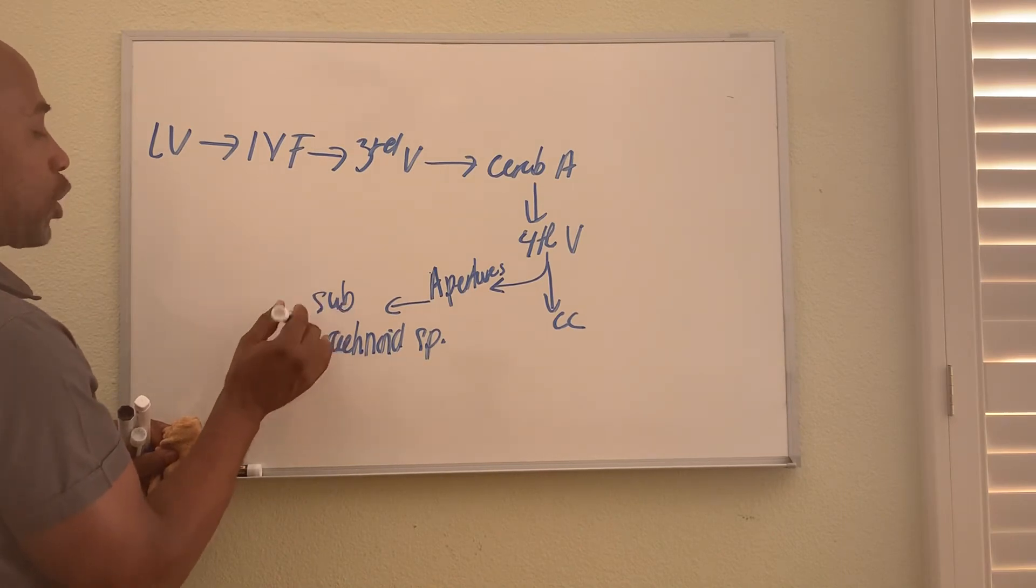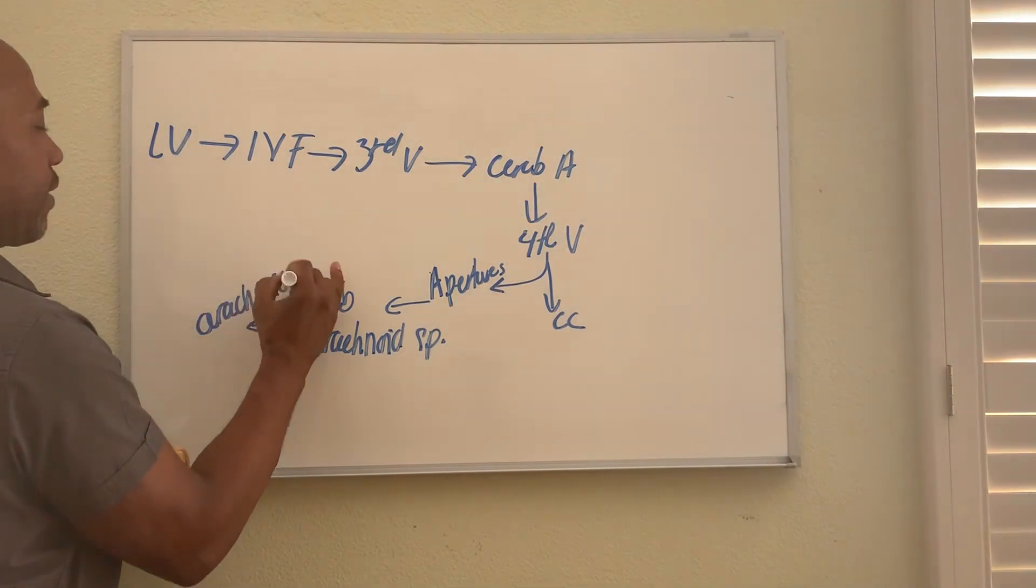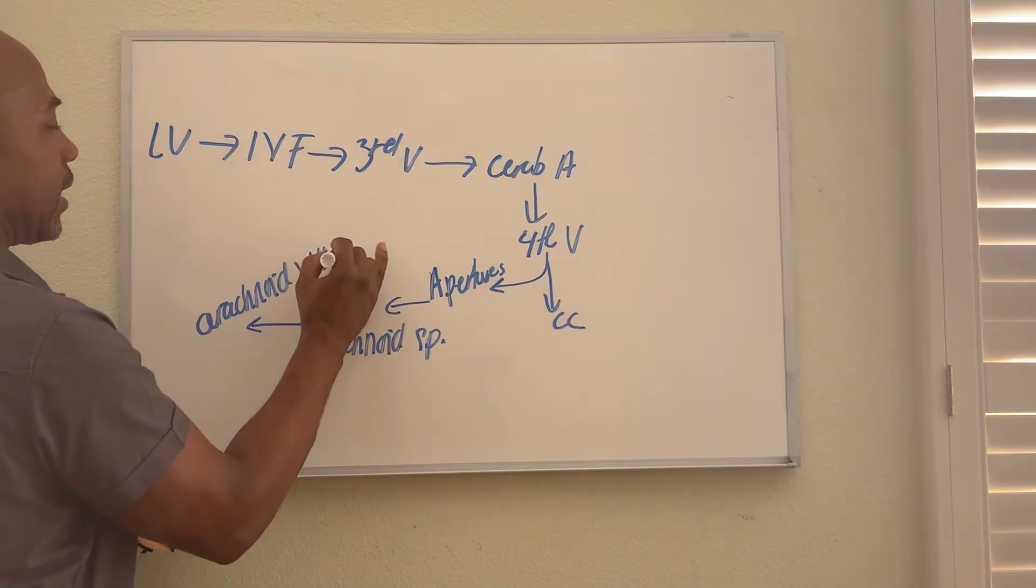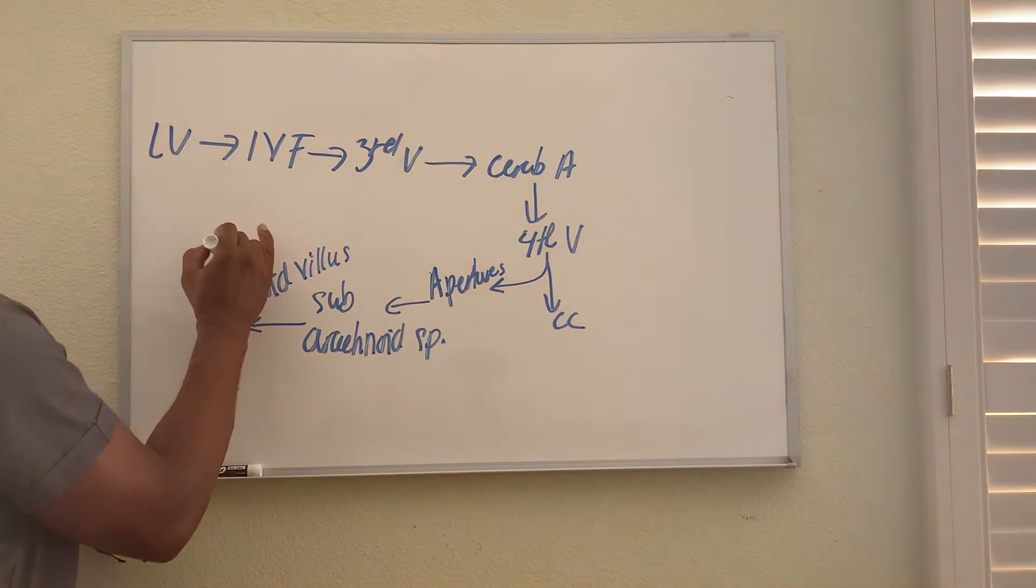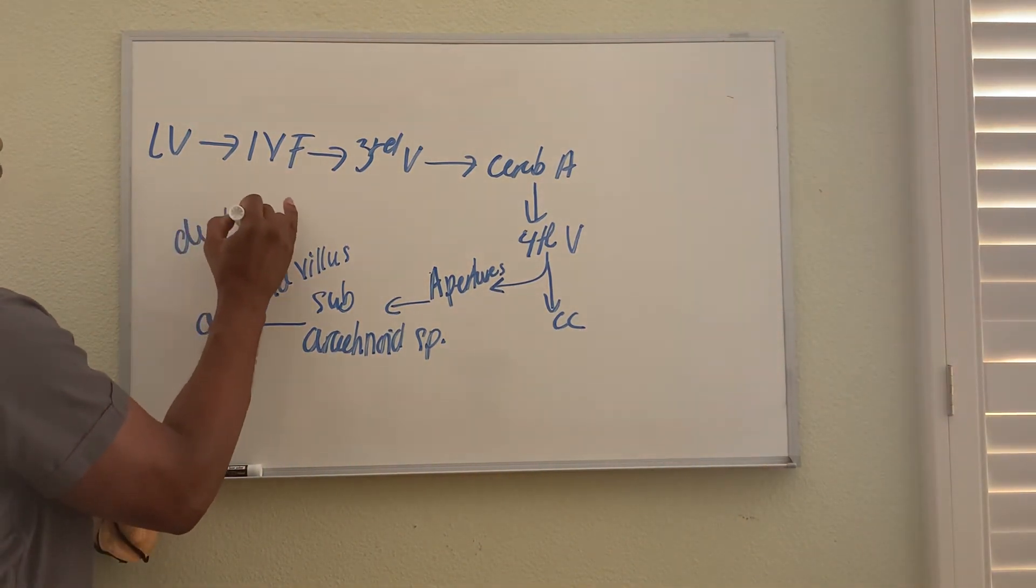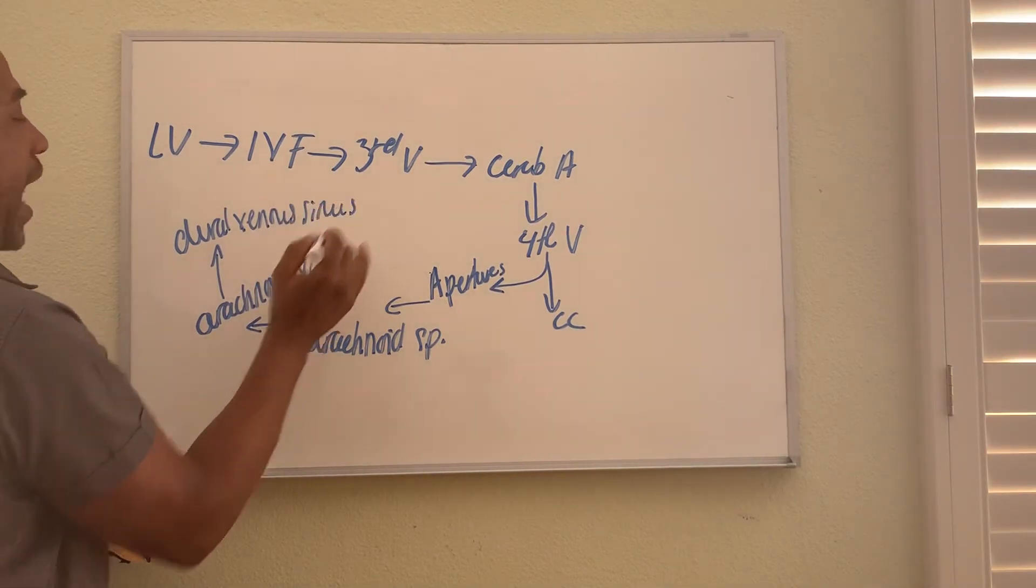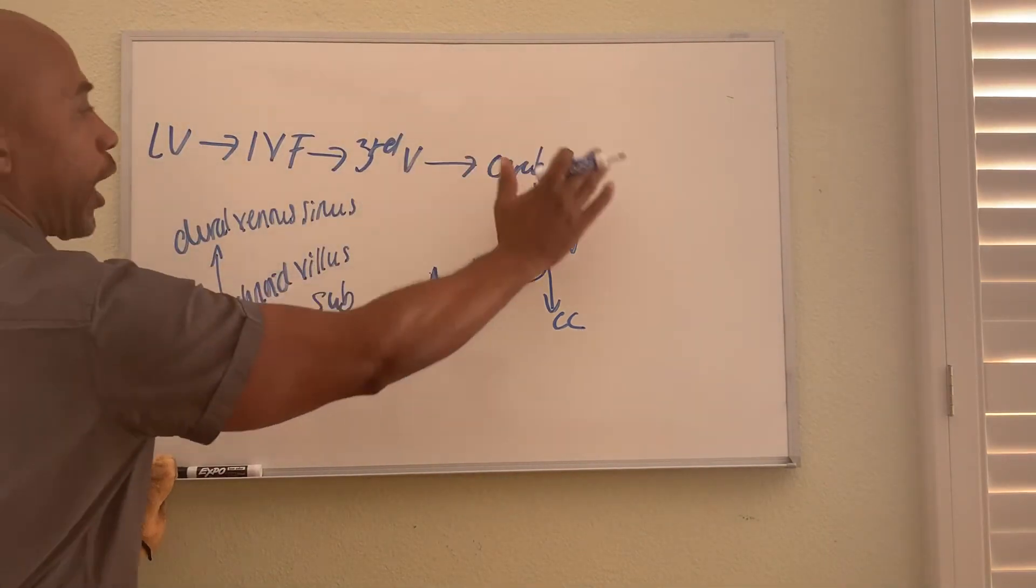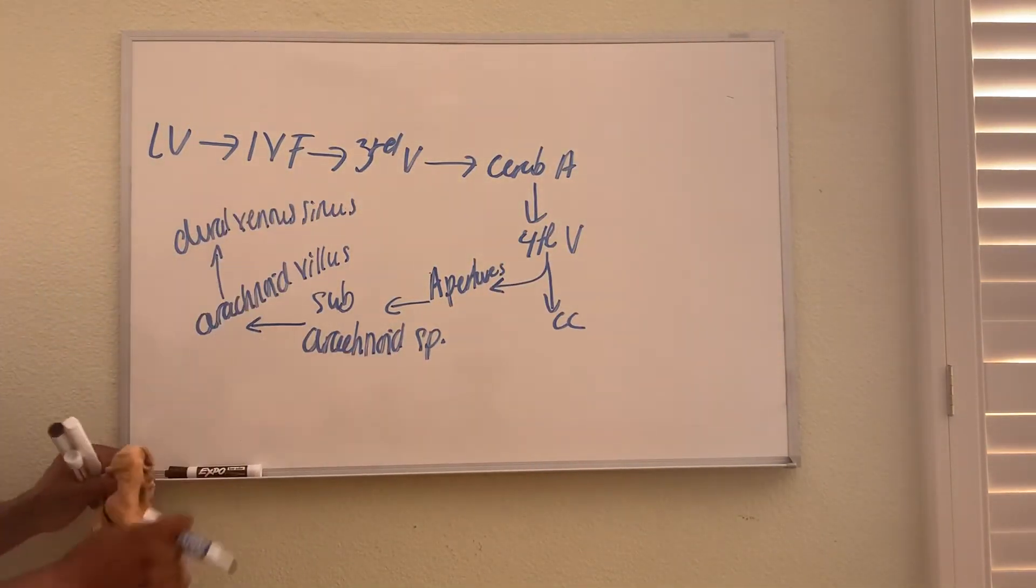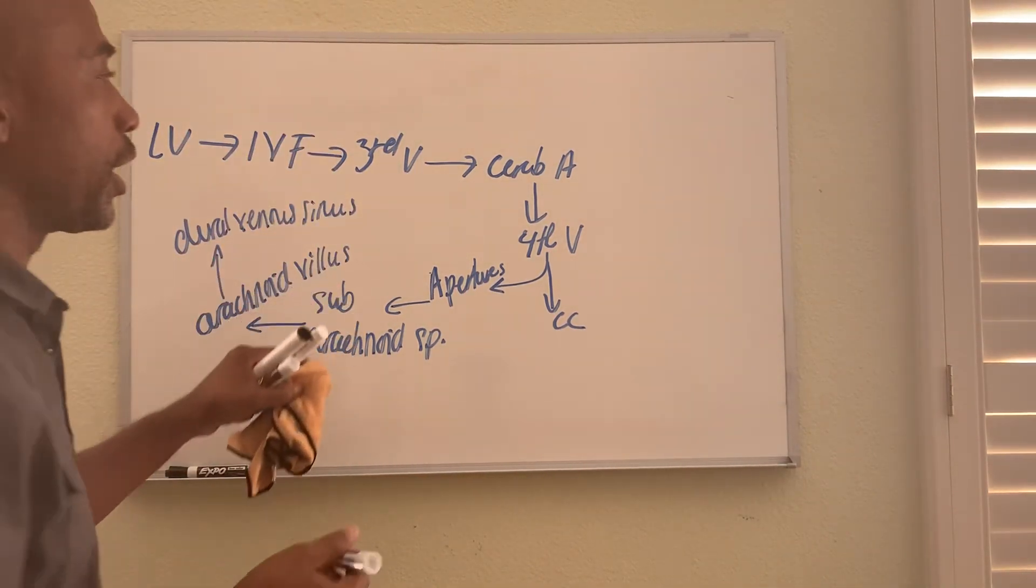Then it eventually will leave this subarachnoid space to flow into things called arachnoid villi. These are little extensions that will push the CSF from there into your dural venous sinuses, which is basically blood. So it's made from the blood, circulates, and then flows back into the blood.